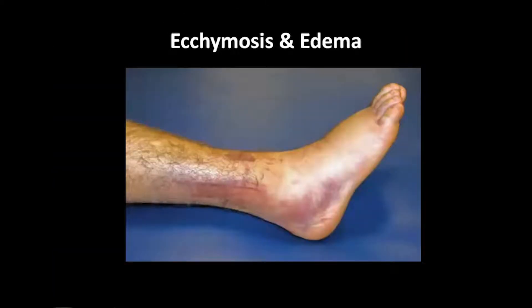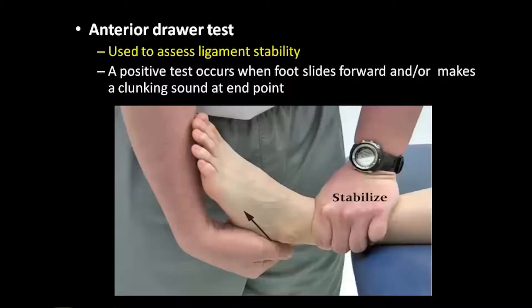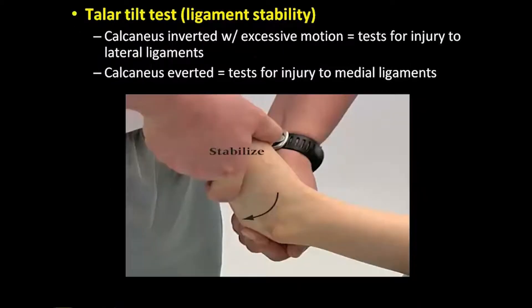The amount of ecchymosis and edema shown in this image would indicate a second or third degree injury. Two common ligament stability tests used to determine the extent of ligament laxity after an injury are the anterior drawer test and the Taylor tilt test.